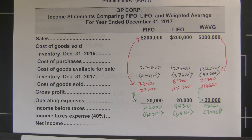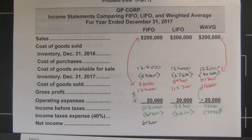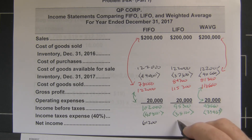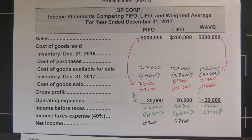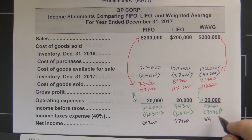Now for the big reveal — drum roll please — what's our net income? Under FIFO it's $61,200. Under LIFO it's less: $57,180. And weighted average is always going to fall somewhere in the middle, and it does indeed: $59,196.